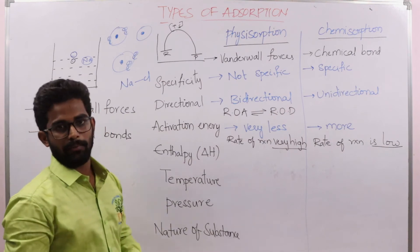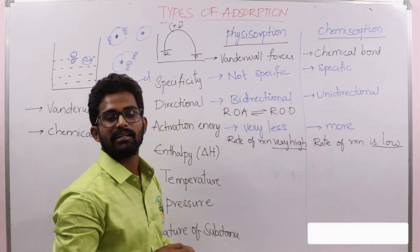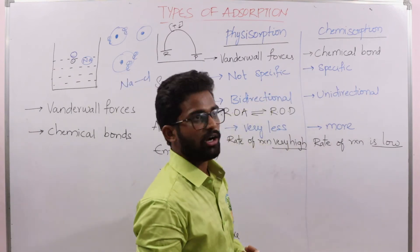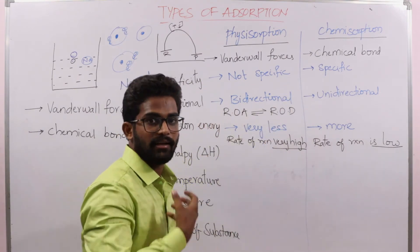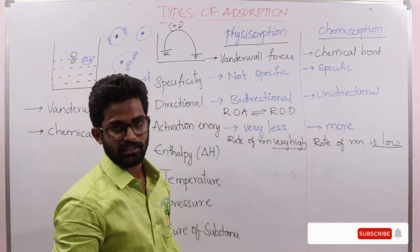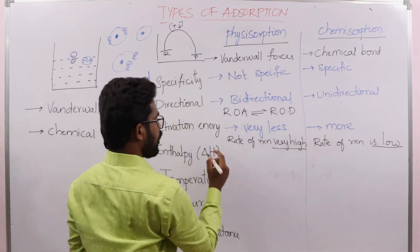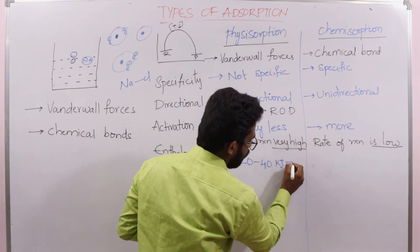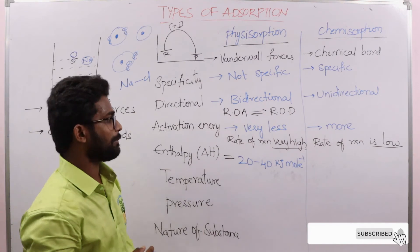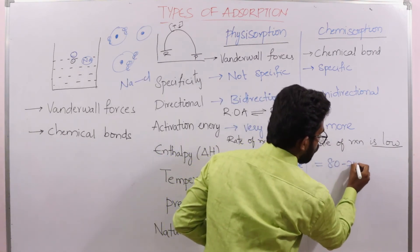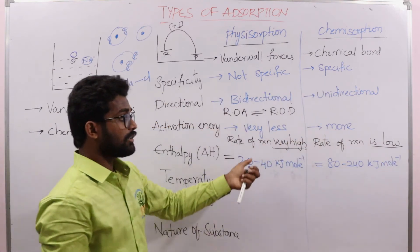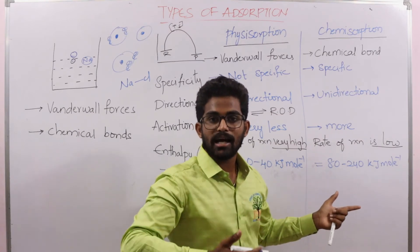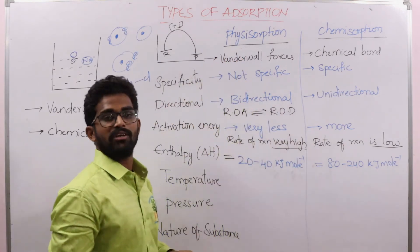Regarding enthalpy: the stability of physisorption is less, so it releases lower energy compared to chemisorption. In chemisorption, the bond formed is more stable and releases more energy. The enthalpy of adsorption for physisorption is approximately 20 to 40 kilojoules per mole, whereas for chemisorption it is 80 to 240 kilojoules per mole, showing that chemical bond formation results in much greater stability.